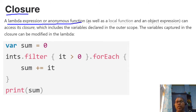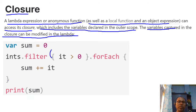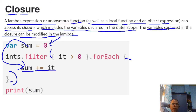There's also the concept of closures. A lambda expression, anonymous function, local function, or object expression can access its closure — variables declared in the outer scope. Unlike Java, Kotlin allows closures to modify captured variables inside the lambda.